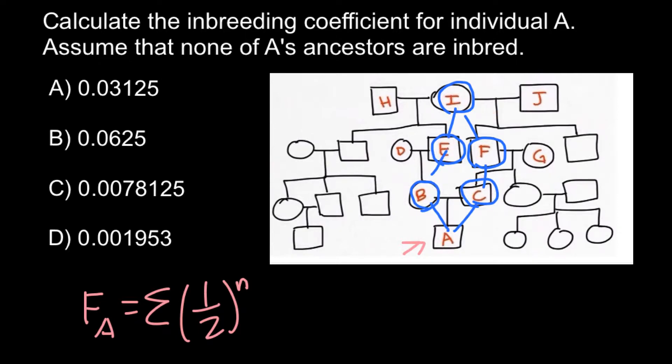So that means that in our calculations we would have one-half in the power of five. And this would give us an inbreeding coefficient of one over 32. Or this is going to be answer A.